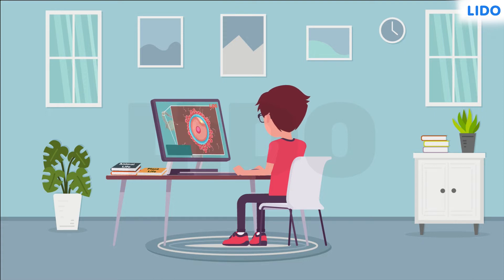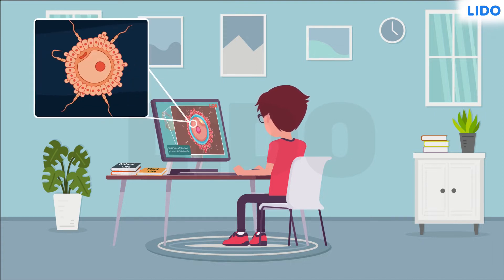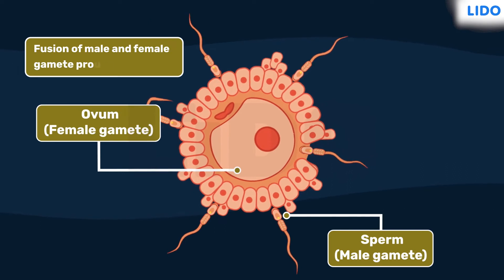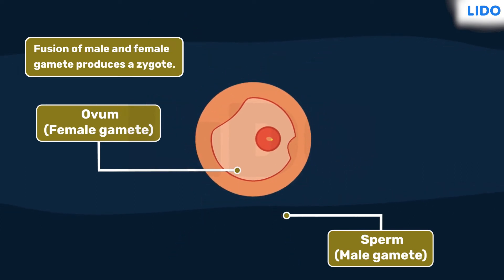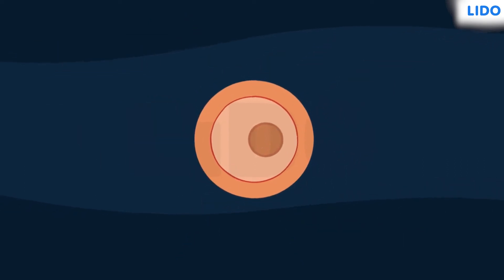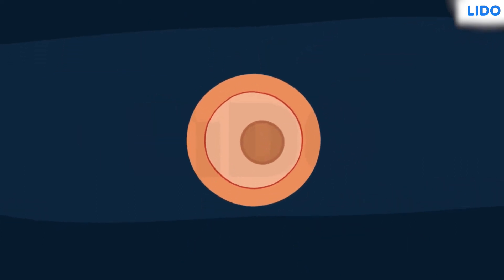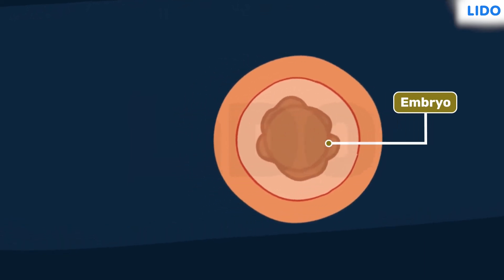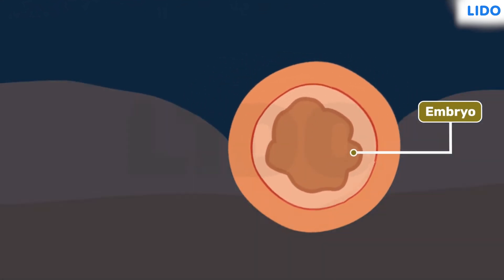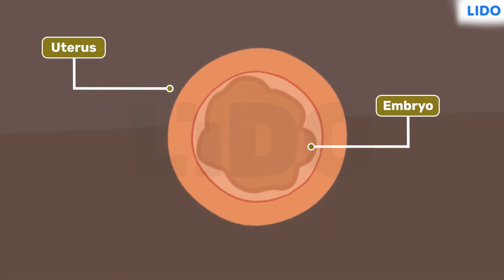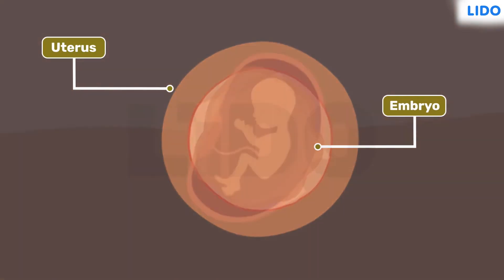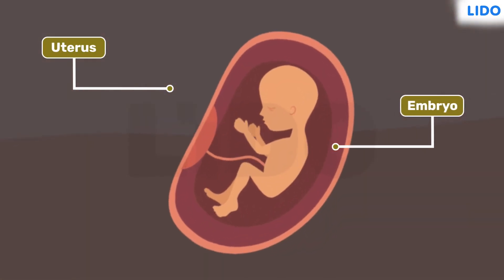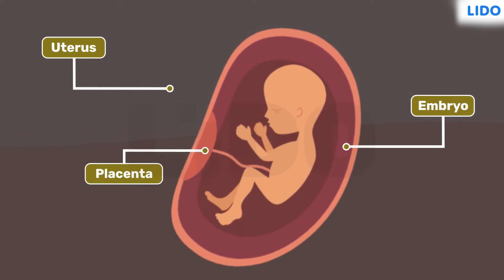During fertilization, one male gamete fuses with one female gamete to form a zygote. The zygote then grows to form an embryo that later grows in a protective bag called the uterus and receives nutrition from its mother through a connecting organ called the placenta.